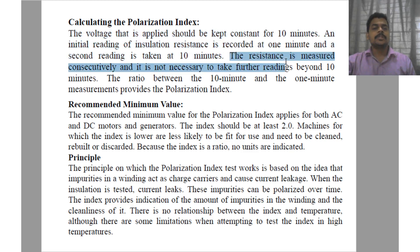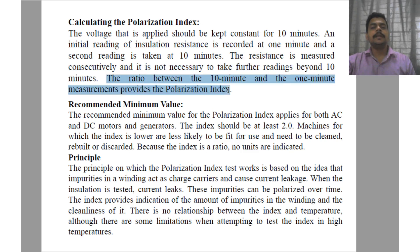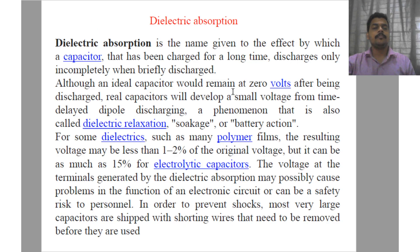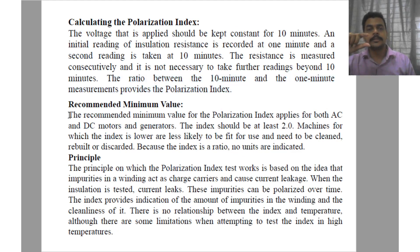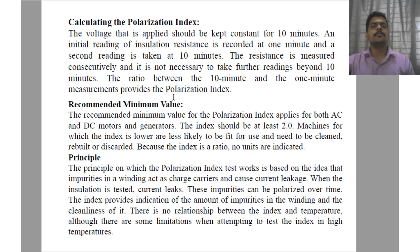The resistance is measured consequently, and it is not necessary to take further readings beyond 10 minutes. You take the ratio between the 10-minute and 1-minute measurements, which provides the polarization index. If the value of polarization index is beyond a certain limit, it means the insulation of that electrical equipment has deteriorated and is of no use, so we must replace that insulator material with new material.